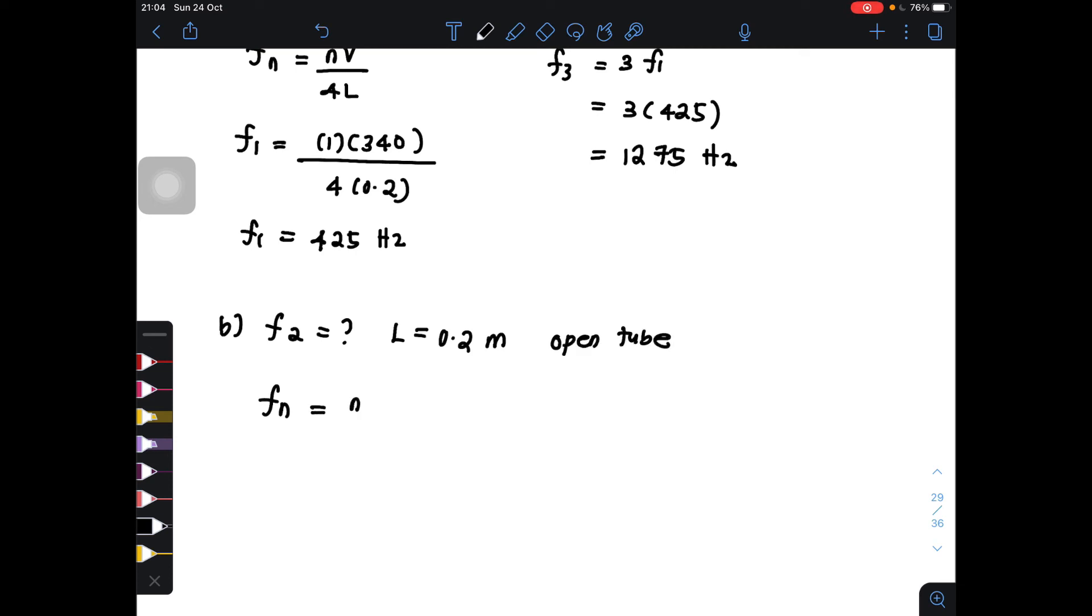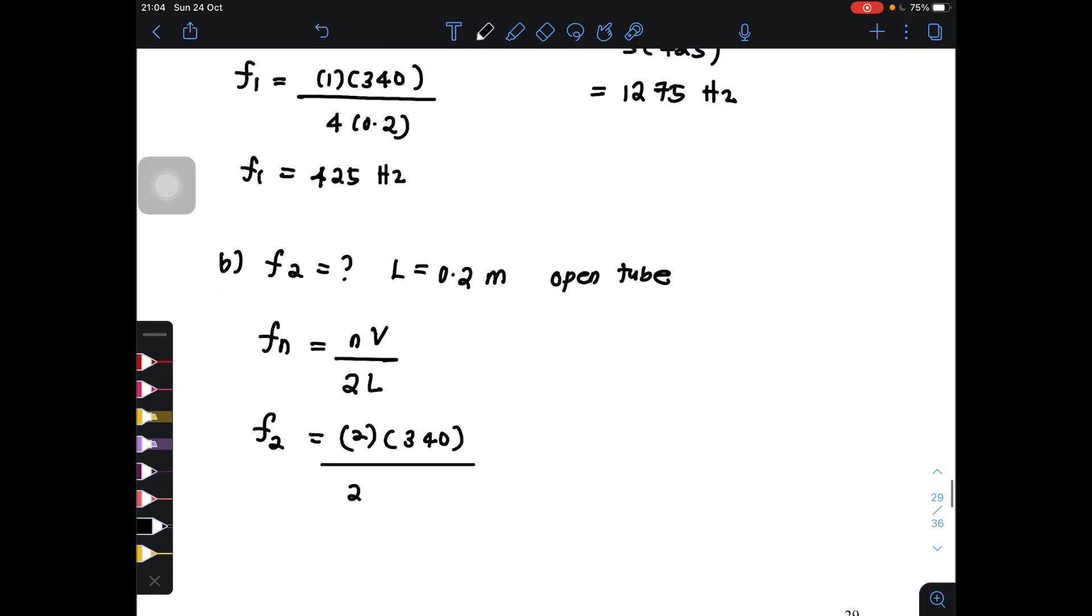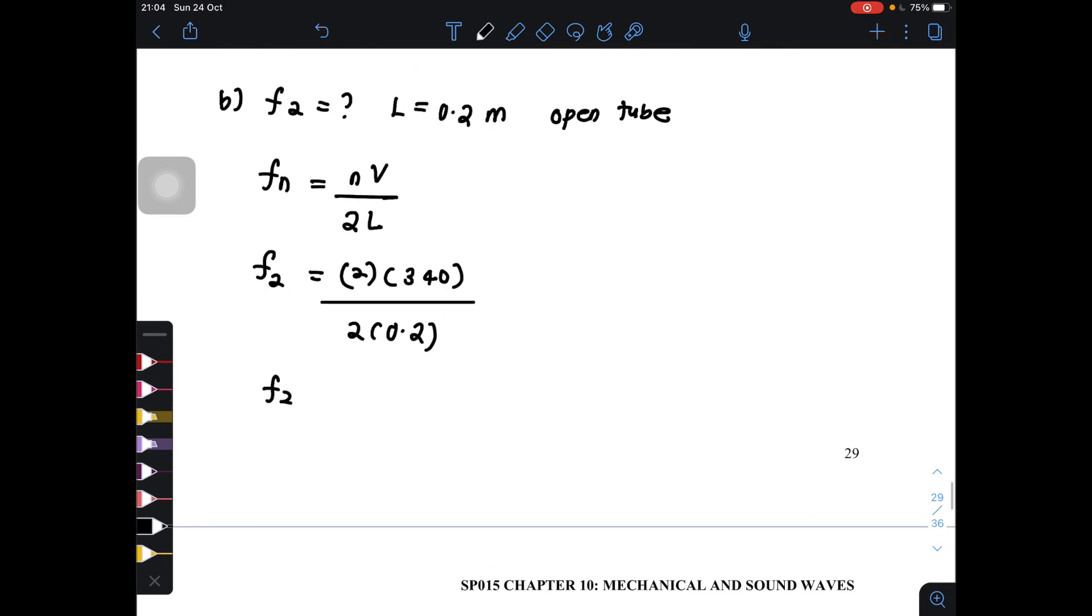So substitute F2. Two times V is still the same which is 340 divided by 2L. So you will get F2 is equal to 1700 Hz.